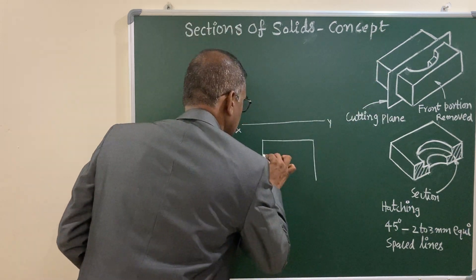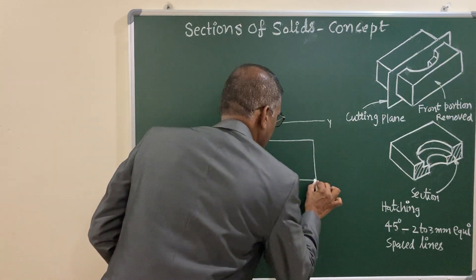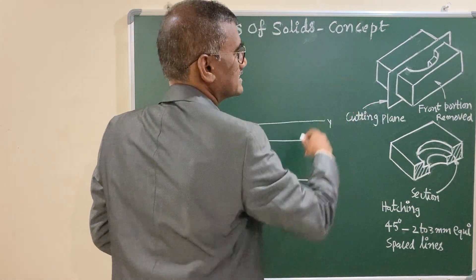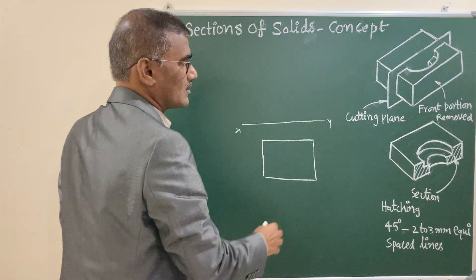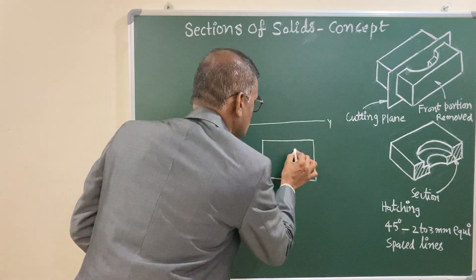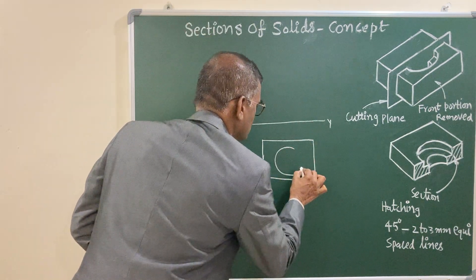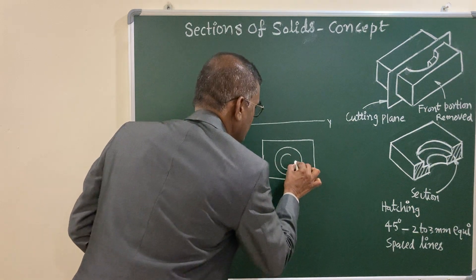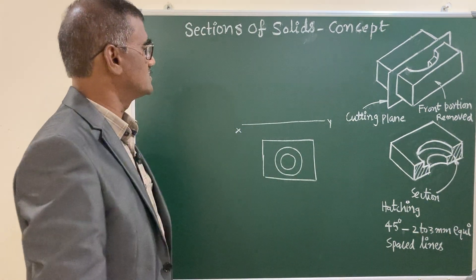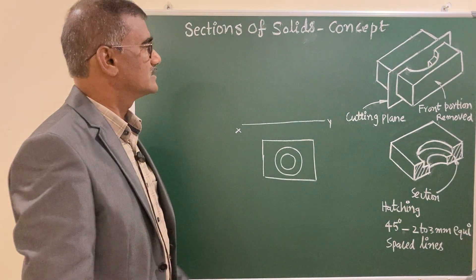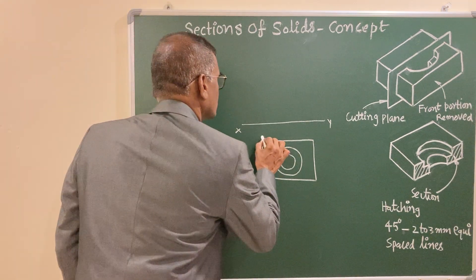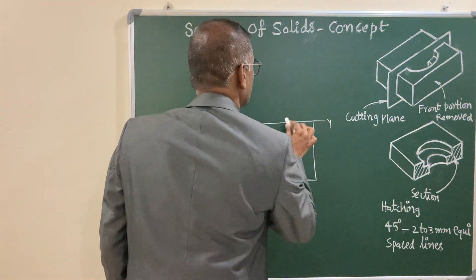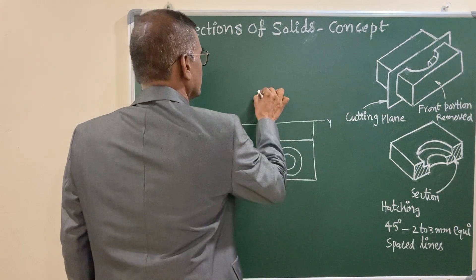Draw the rectangle of given dimensions and you can see there are concentric circles. They appear in the top view because a counter boring operation is done for an Allen bolt - that is the object. This is the top view. Draw the projectors and draw the front view.